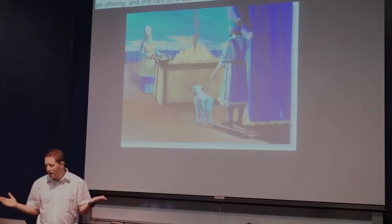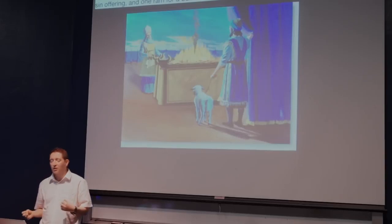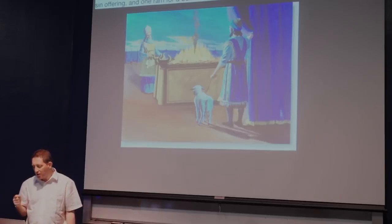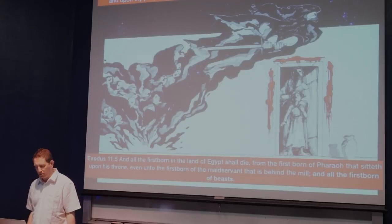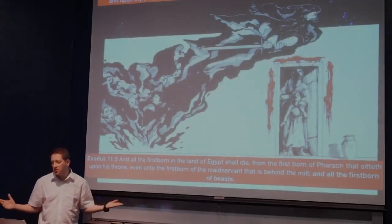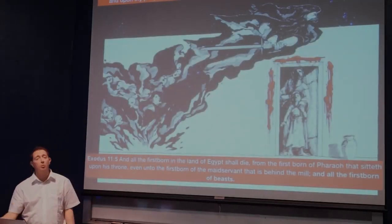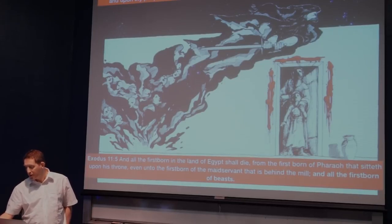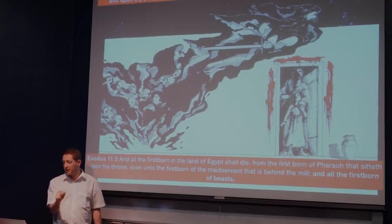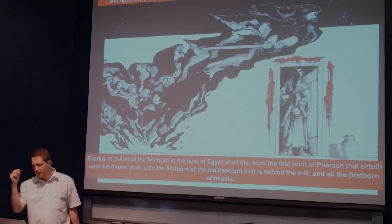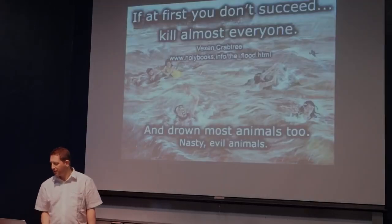But the problem isn't limited to the suffering that God commands of others, but also includes the suffering that God directly inflicts on animals. When he killed the firstborn Egyptians, he didn't just limit it to the people, but also their animals. And the Bible gives us an explanation as to why he did this. He wants to show off his power.